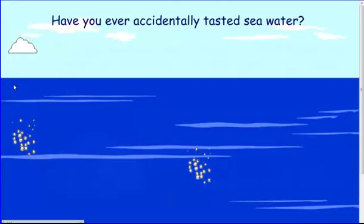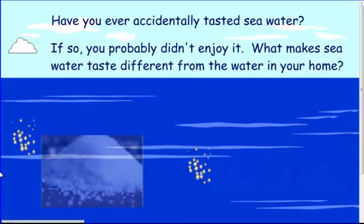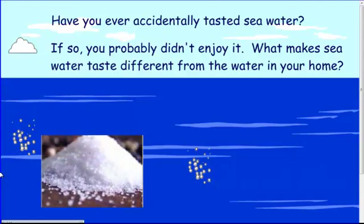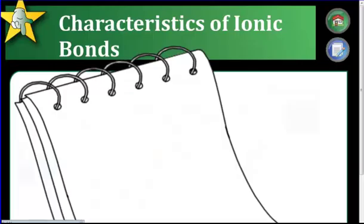Have you ever accidentally tasted seawater? If so, you probably didn't enjoy it very much. What makes seawater taste different from water in your home? Seawater tastes different because salt's dissolved in it. One of the salts in seawater is the same as the salt that you eat, NaCl. The chemical bonds in salt are called ionic bonds. So we're going to discuss kind of what exactly ionic bonds are and what makes them unique from other bonds.